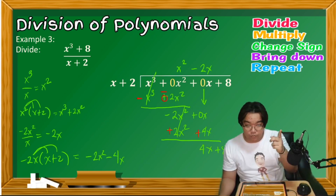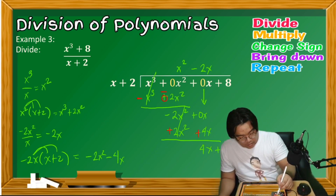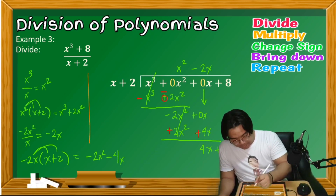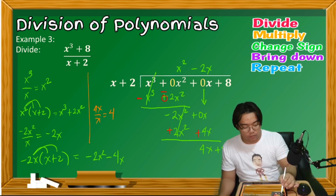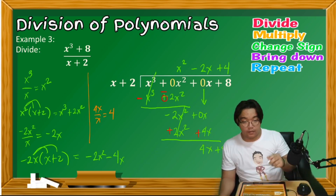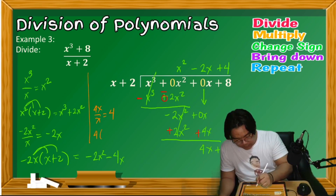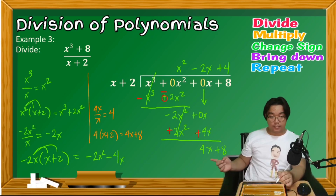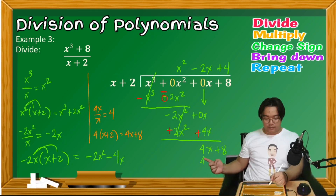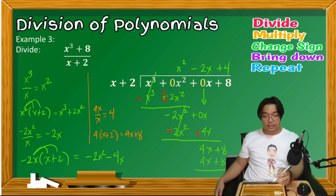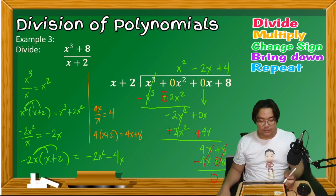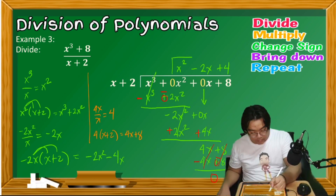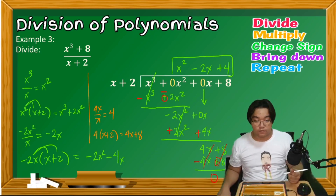Repeat step 1: 4x divided by x gives positive 4, written on top of the constant 8. Multiply 4 by the divisor x + 2 to get 4x + 8, placed below. Change the signs to negative and add — there is no remainder. The quotient is x² − 2x + 4.